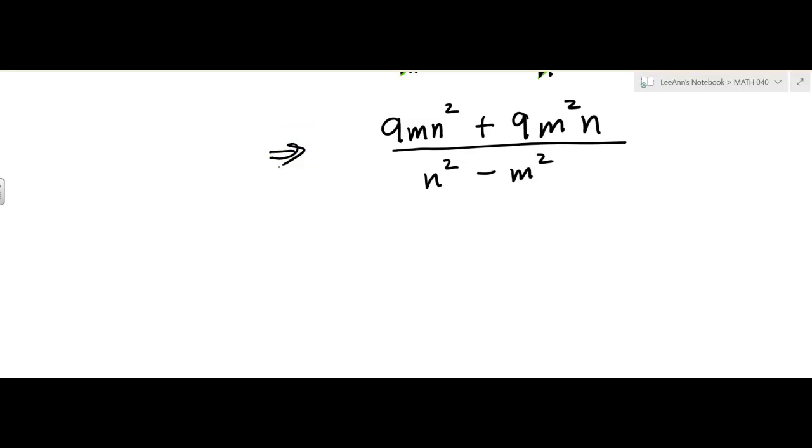So in the numerator, can I factor? And I can. I can take out a 9, an M, and an N. That would be the GCF for the numerator. And then what do I have left? An N plus an M.